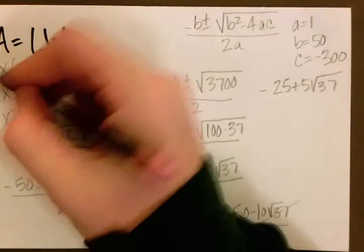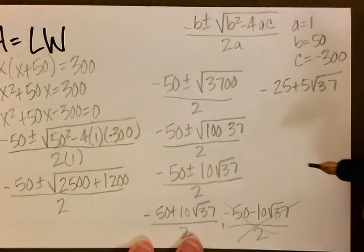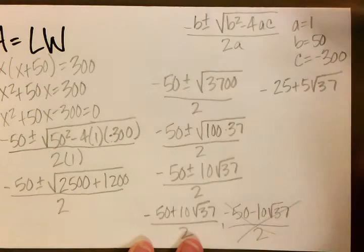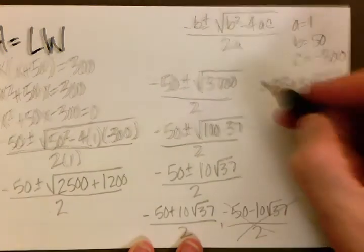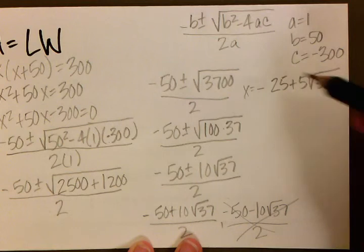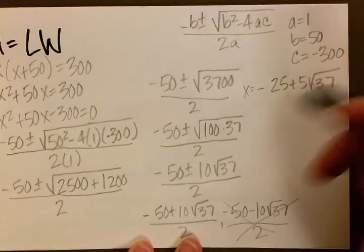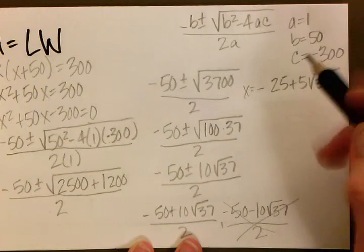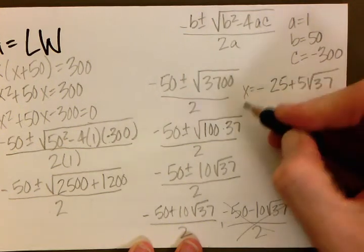And remember, all of these were solving for x. So now we have x equals negative 25 plus 5 square root 37. 5 times the square root of 37 minus 25 is still a positive number. So that is our x, and that is going to be our width.